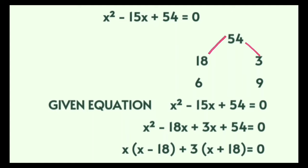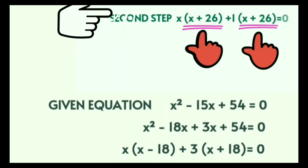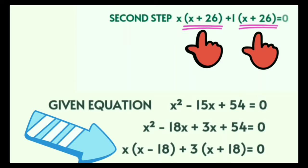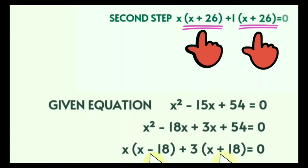Remember, in the second step the terms in both brackets must be exactly the same including the signs. Here, one bracket is x minus 18 while the other is x plus 18 — the signs are different. This means continuing to solve will give a wrong answer. So we stop here and restart using new factors with the appropriate signs applied correctly.